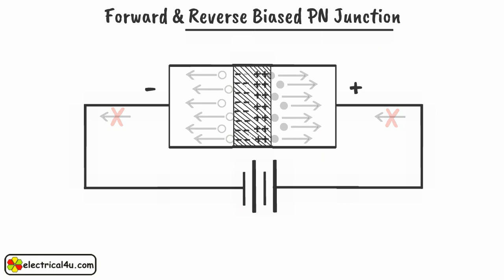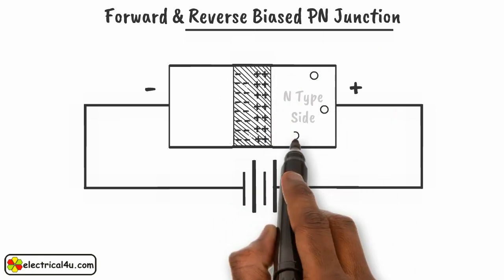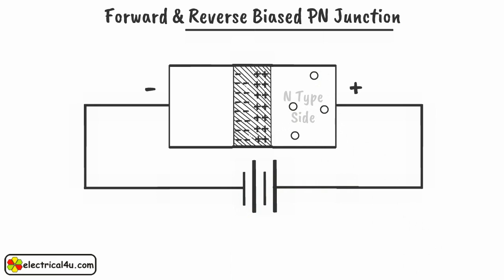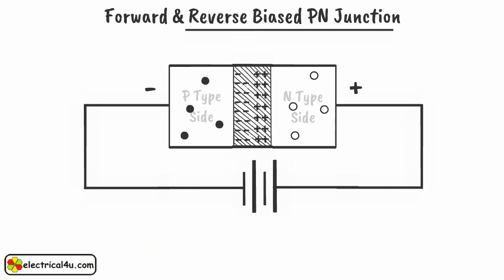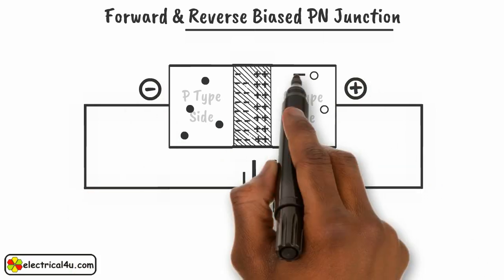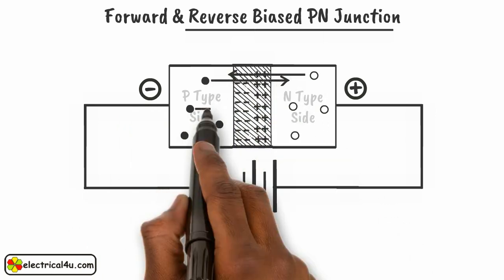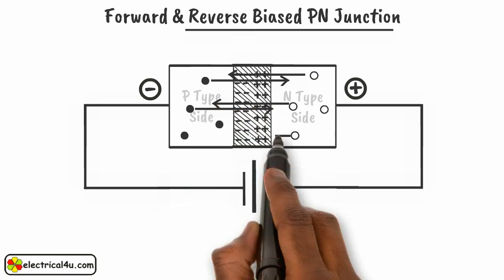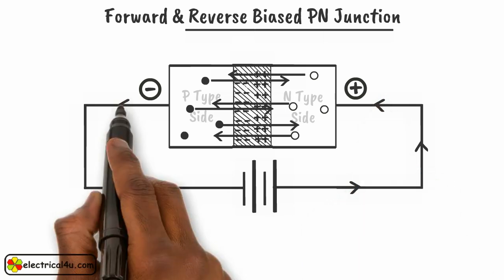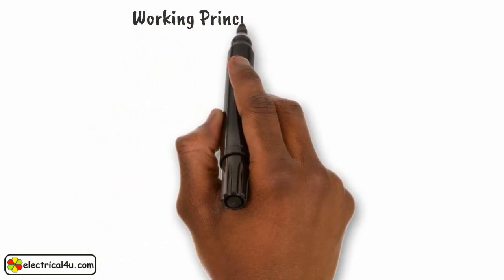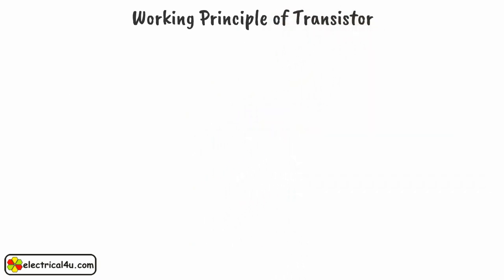But here, one interesting thing happens. We know that there are always some holes present in the N-type side of the junction as minority charge carriers. Also, there are always a few free electrons present in the P-type side of the junction as minority charge carriers. Due to the electrostatic force of the applied reverse voltage, the holes in the N-type side and free electrons in the P-type side will cross the junction easily. This is because the barrier potential of the reverse biased depletion region cannot obstruct the flow of free electrons from P-type side to N-type side, and holes from N-type side to P-type side. This causes a tiny current to flow through the P-N junction even in reverse biased condition. We have discussed this phenomenon of reverse biased P-N junction because it is quite essential for explaining the basic working principle of a bipolar junction transistor.